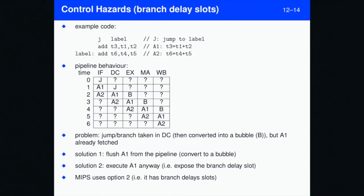So the question is, what do we do about that? So the first solution is to simply execute A1 regardless. And that introduces this branch delay slot that is exhibited by MIPS processors.